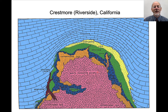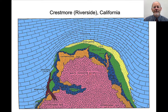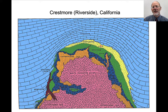Here, for example, is the Crestmore Quarry, which was in Riverside, California. As I understand it, it's completely mined away. But there was an intrusion, a quartz monzonite, with a mixed zone. There's metamorphism of the surrounding limestone creating characteristic mineral zones: garnet zones where garnet was stable, idocrase — a calc-silicate — monticellite, another calc-silicate. Many contact aureoles have this distribution of mineral zones around them.